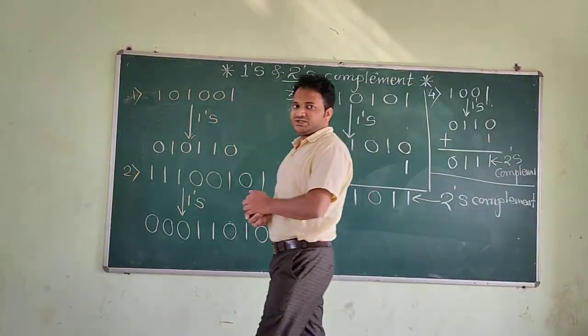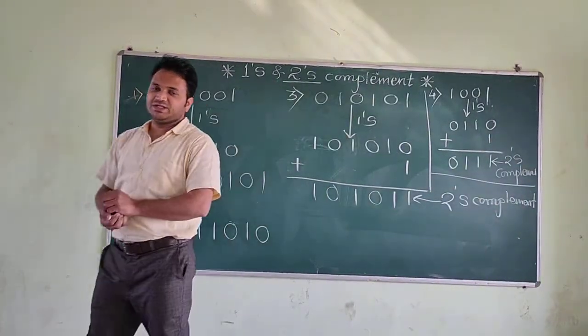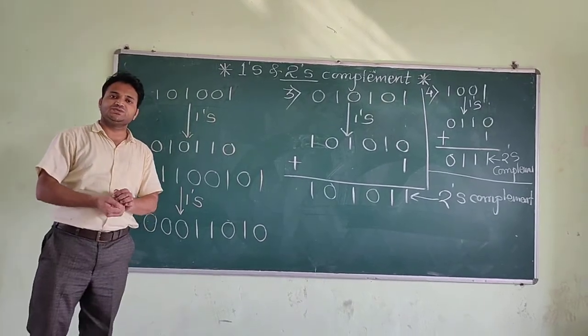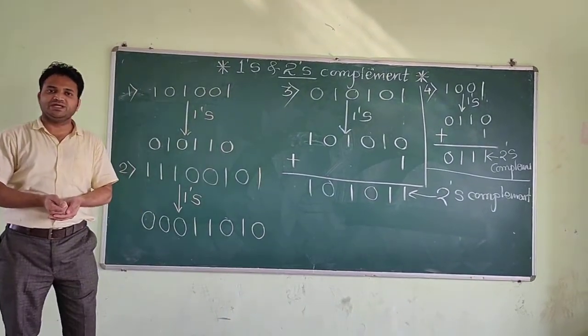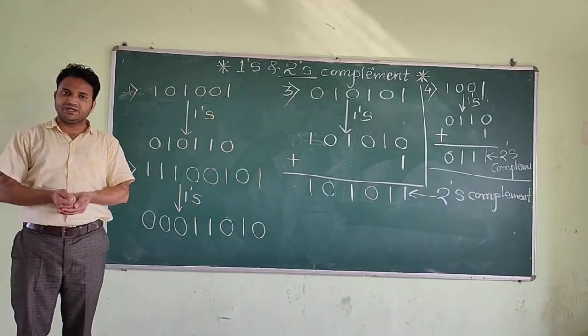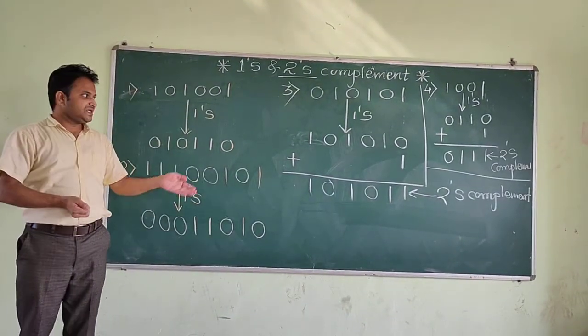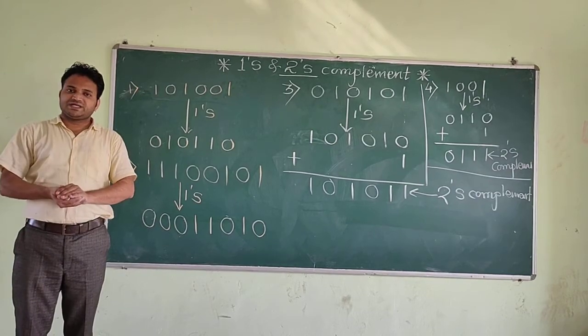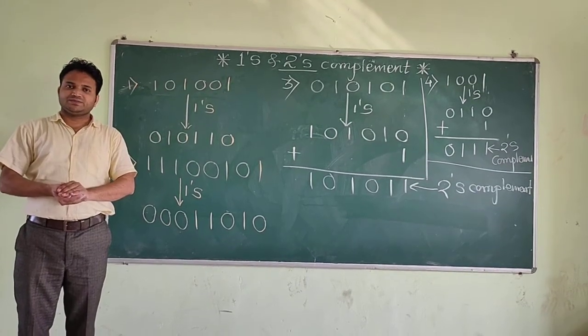I think you understand this particular procedure — how to find the 1s and 2s complement of a given binary number. It is very easy. I hope you will understand. Thank you.